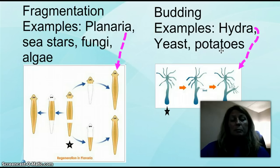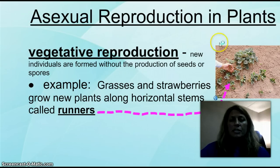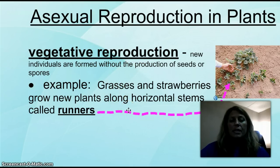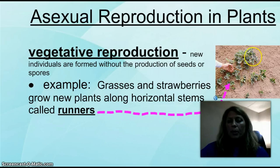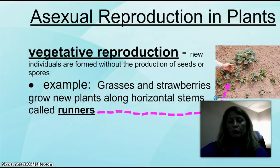Make sure that you can explain these examples and the difference between the two if we have a quiz in the near future. Asexual reproduction in plants: when you have vegetative reproduction, it's going to make new individuals without the production of seeds or spores. Good examples would be grass and strawberries — they send out little horizontal stems called runners, sometimes also called rhizomes or stolons if they run above or below ground. Here's an example of a strawberry plant: this is the parent plant, and all these little stems coming off on top of the ground are little runners that will develop the fruit or the strawberries.